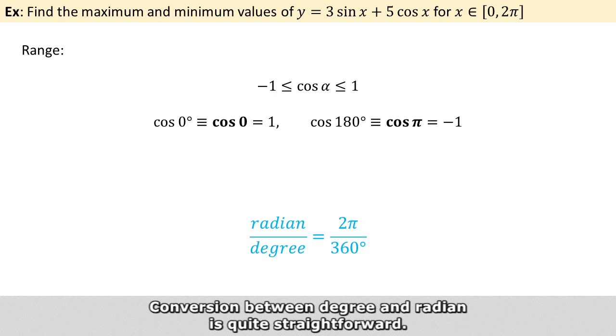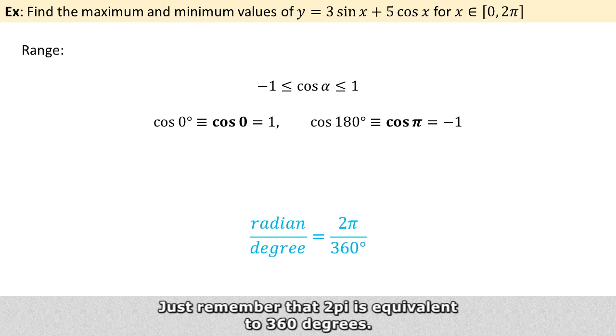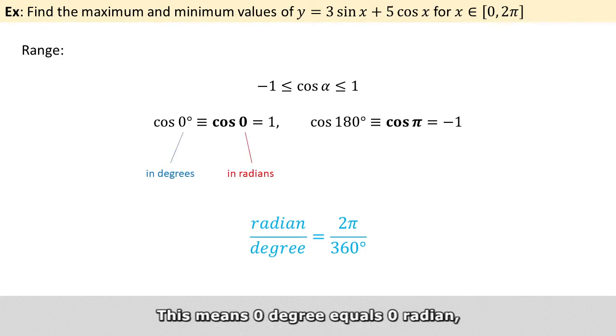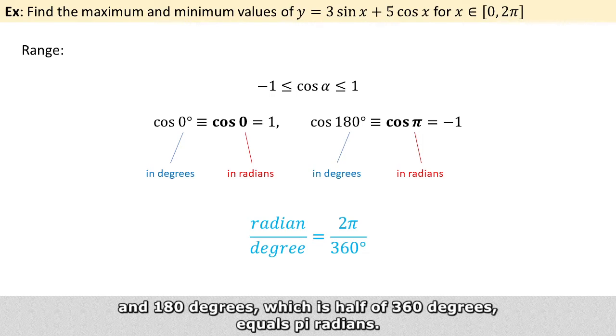Conversion between degrees and radians is quite straightforward. Just remember that 2 pi is equivalent to 360 degrees, and you should be able to find one from the other using a ratio. So this means 0 degrees equals 0 radians, and 180 degrees, which is half of 360, equals pi radians.